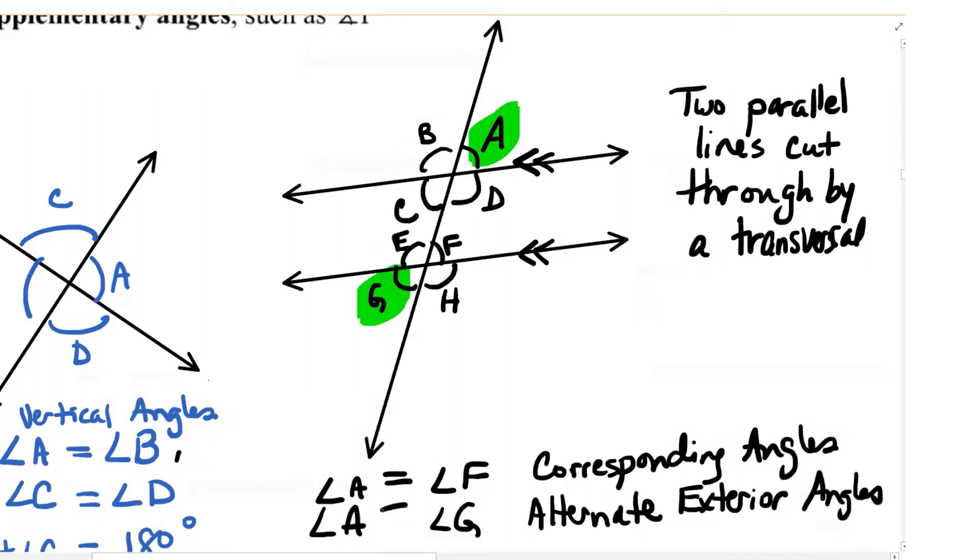And guess what? They're equal, which makes sense because we know angle A is equal to angle F because they're corresponding. And angle F and angle G are vertical angles. So they're the same too. So it must be that alternate exterior angles are equal.